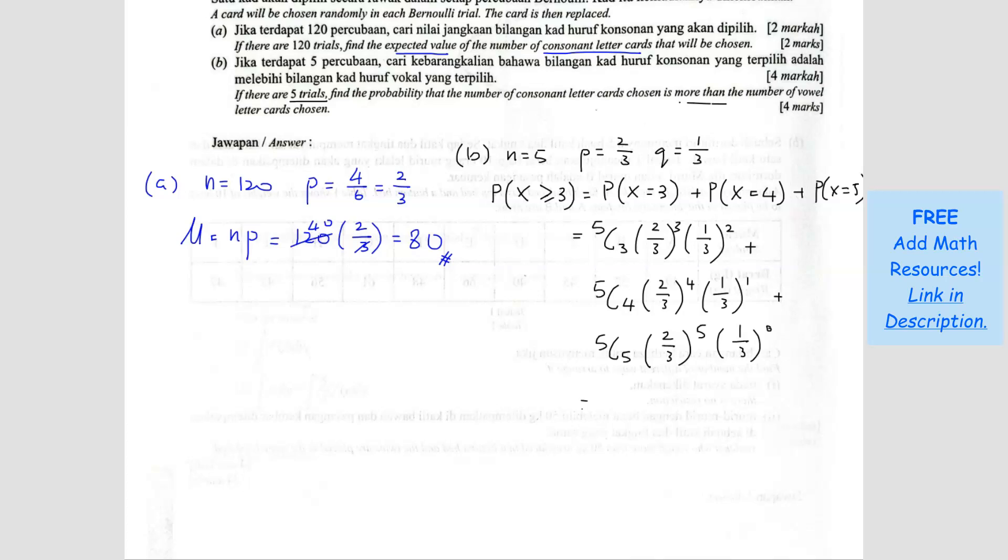So you just have to calculate this. Key into your calculator. Your final answer will be 64 over 81, or you can write in decimal, that will be 0.7901.